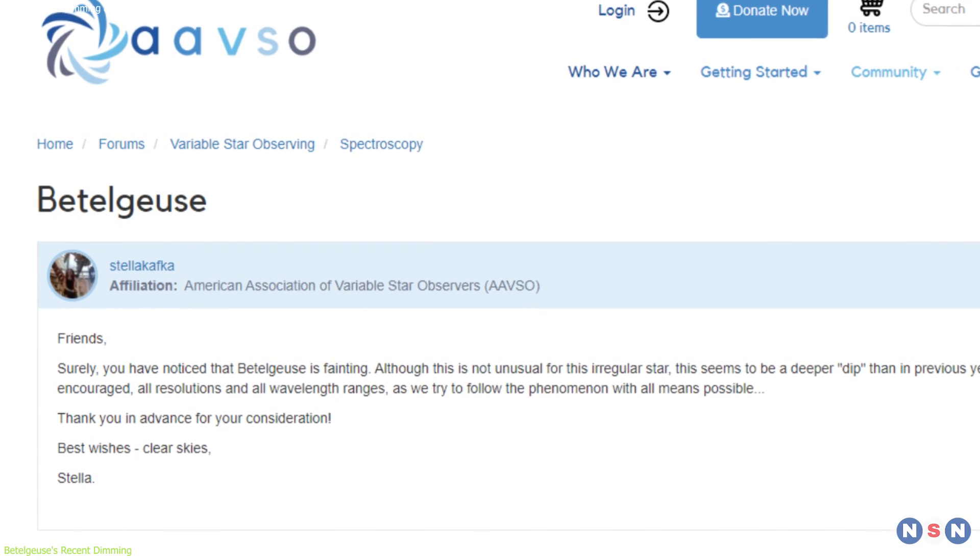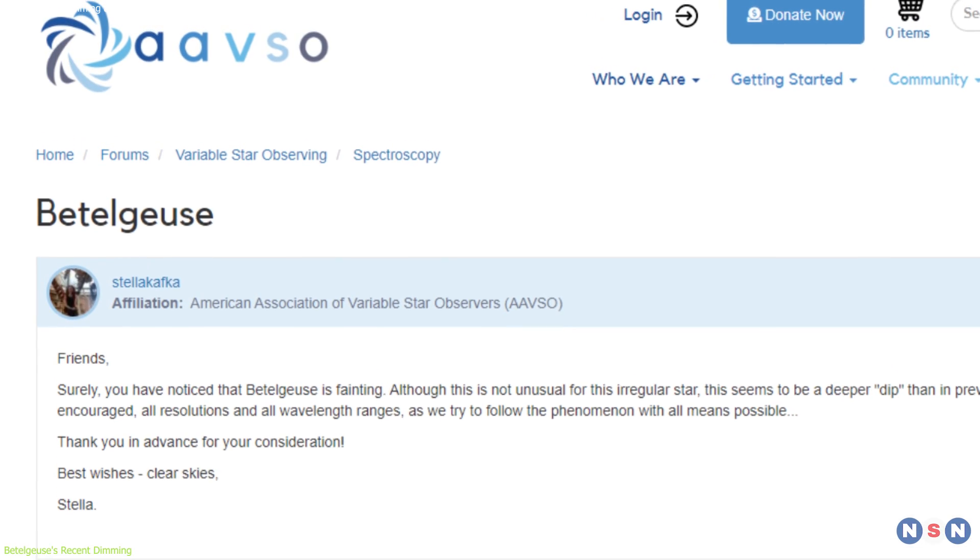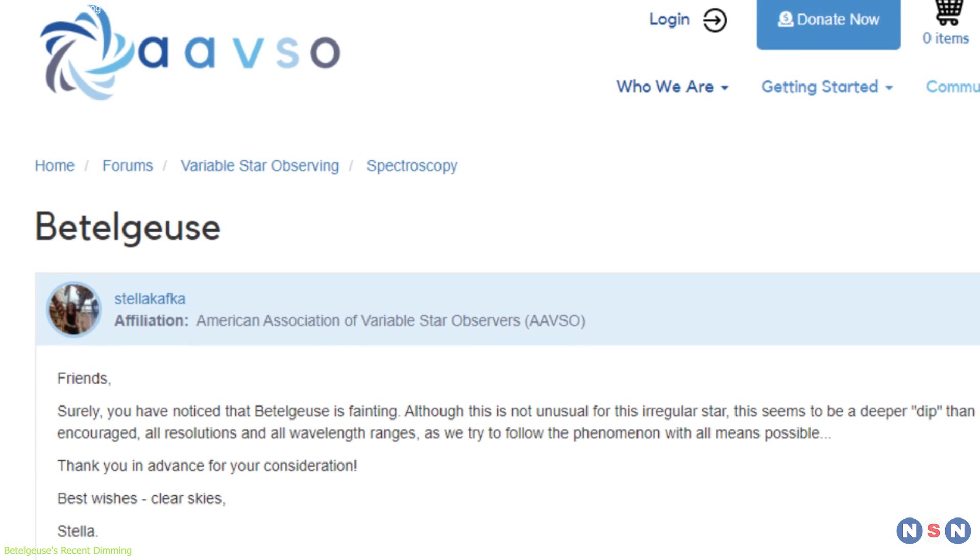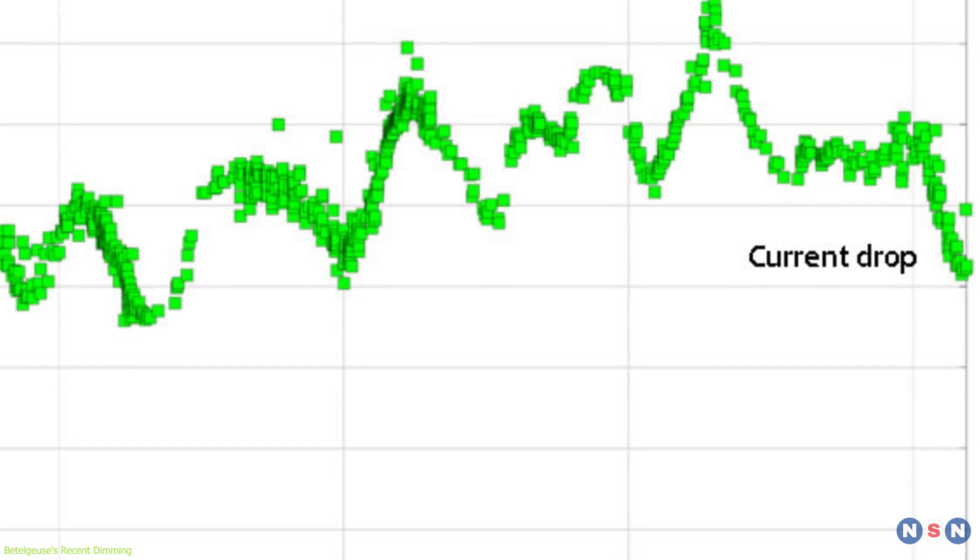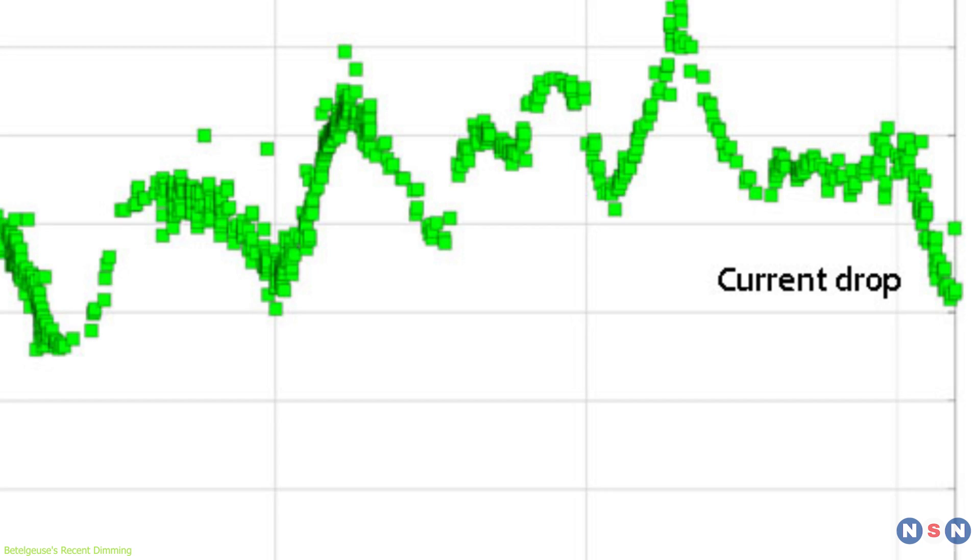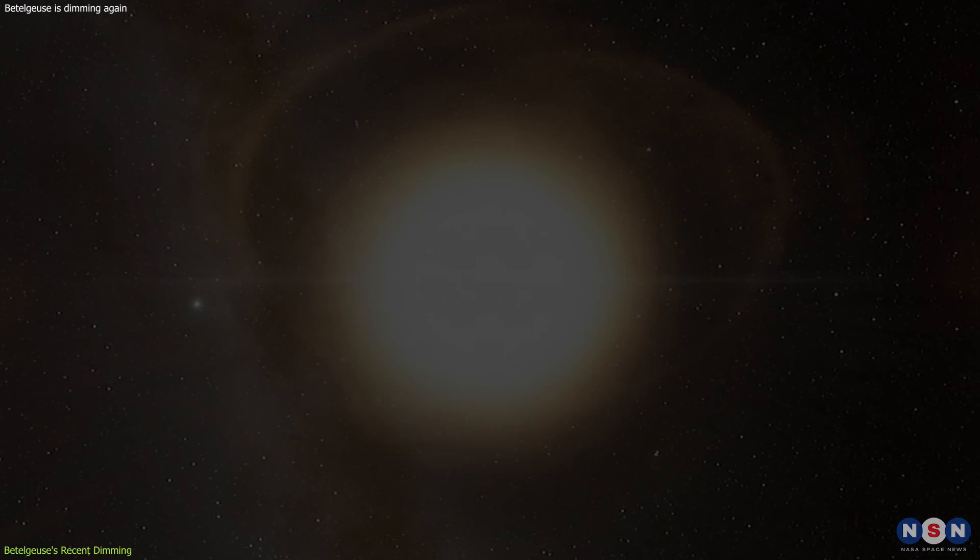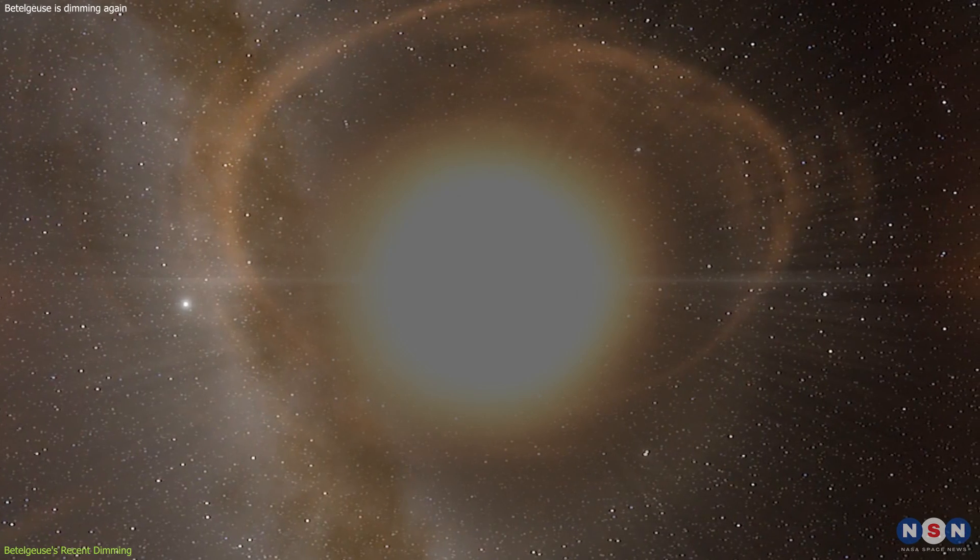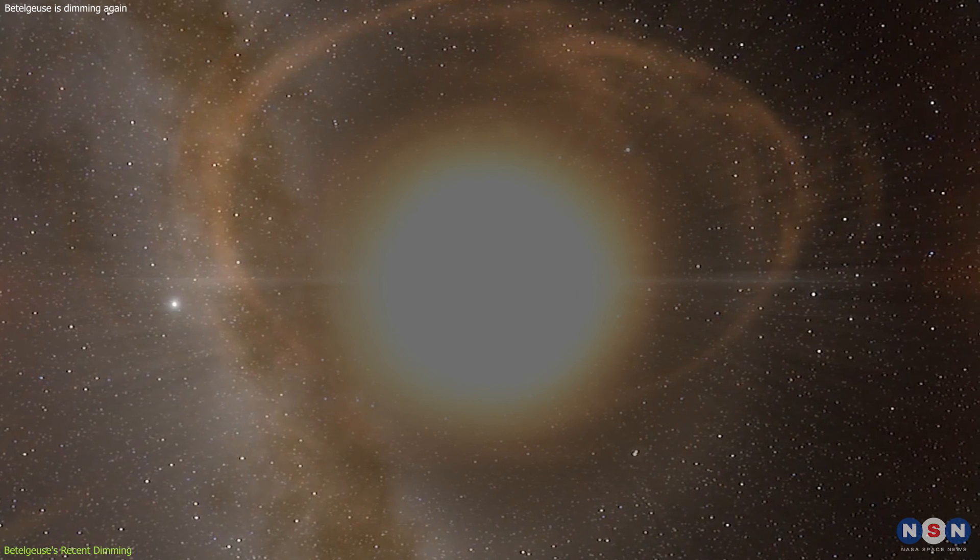On March 14, 2024, the American Association of Variable Star Observers reported that Betelgeuse has dimmed by about 0.5 magnitude since late January. This significant change in brightness has led to speculation about the star's stability and future.